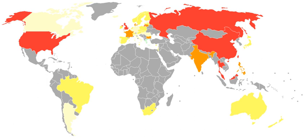Public disclosure of private facts arises where one person reveals information which is not of public concern, and the release of which would offend a reasonable person. Unlike libel or slander, truth is not a defense for invasion of privacy. Disclosure of private facts includes publishing or widespread dissemination of little-known, private facts that are non-newsworthy, not part of public records, public proceedings, not of public interest, and would be offensive to a reasonable person if made public.